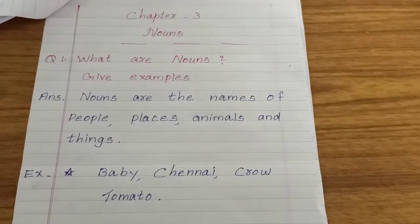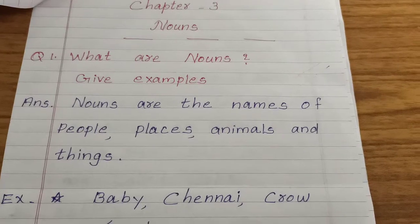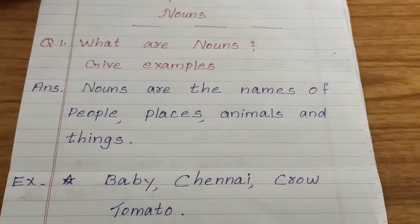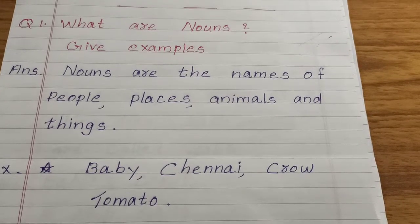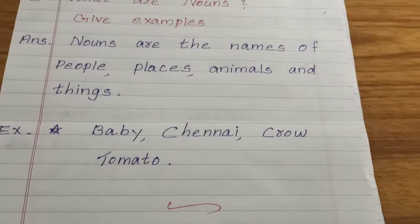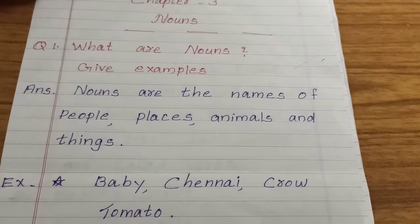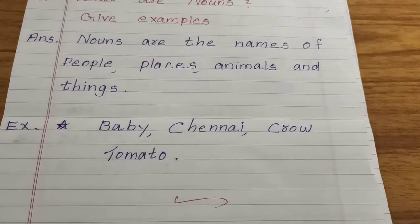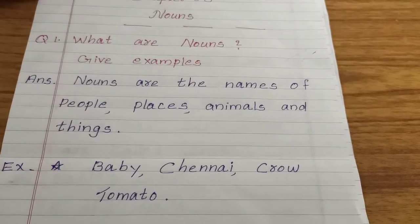Write down the heading: Chapter 3 - Nouns. Question number 1: What are nouns? Give examples. Answer: Nouns are the names of people, places, animals and things. Example: baby, Chennai, crow, tomato.